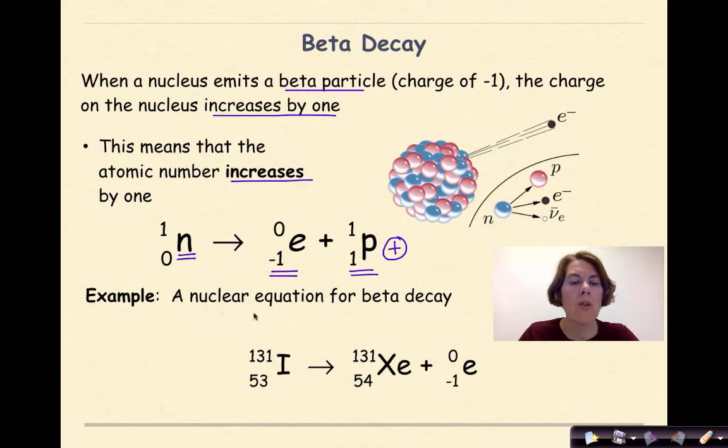Let's look at an example. A nuclear equation for beta decay. I start out with iodine 131. It's going to undergo beta decay. As a result, my mass number does not change. I start with 131. I end with 131. Because 131 plus 0 will still give me 131.